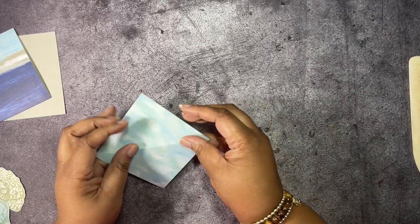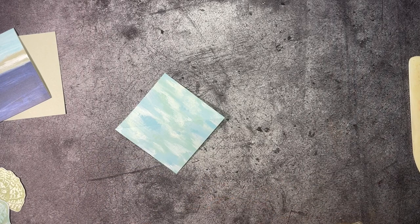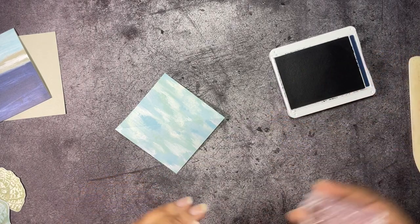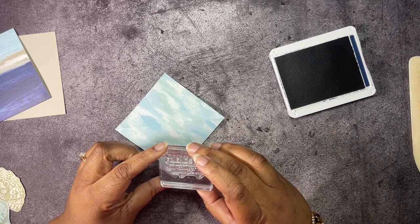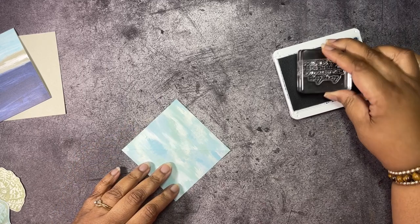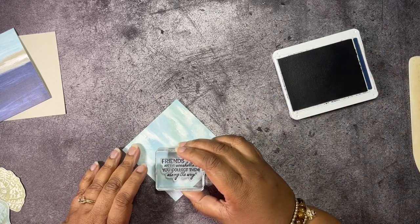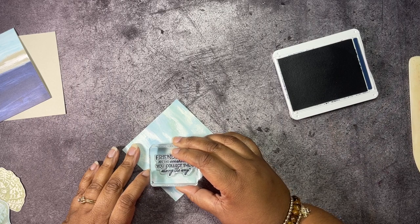We have one more thing to stamp. Let's see which side I want to use. We're going to stamp on this in Night of Navy our sentiment that says 'Friends are like seashells, you collect them along the way,' and I am hoping to get this straight on here in the center.